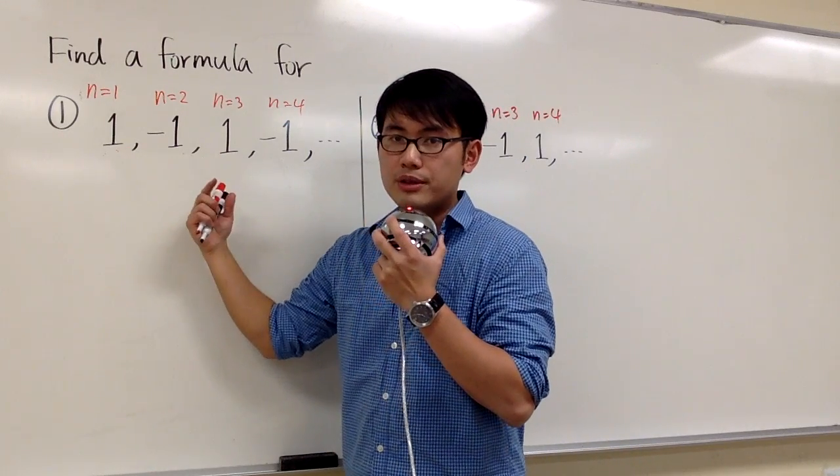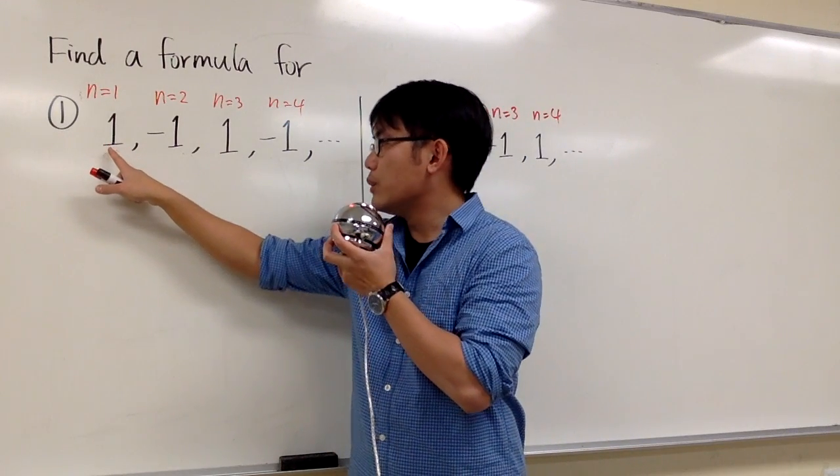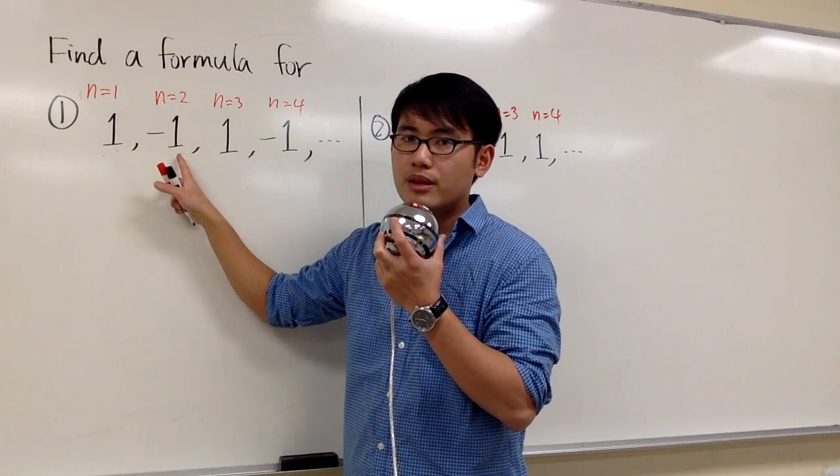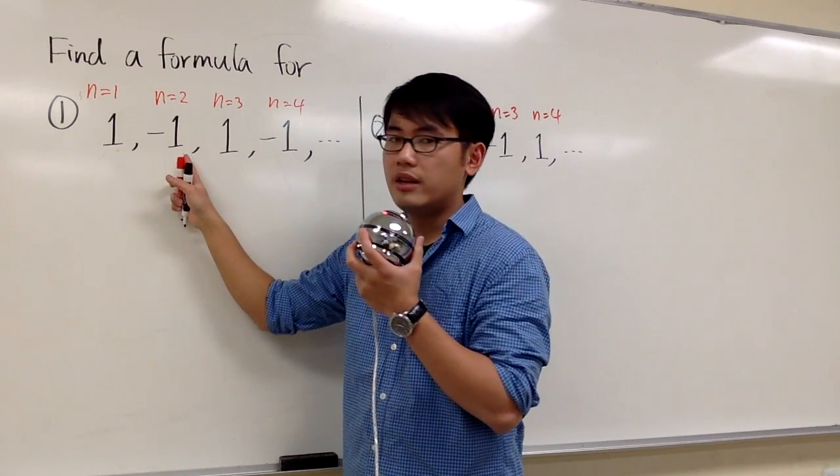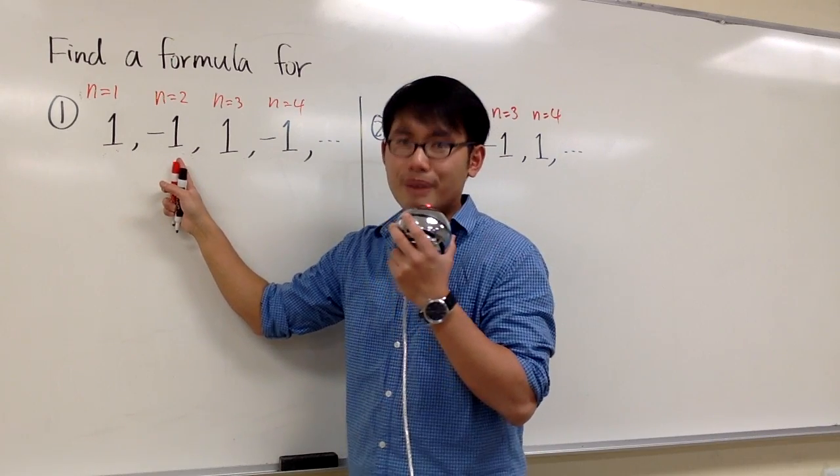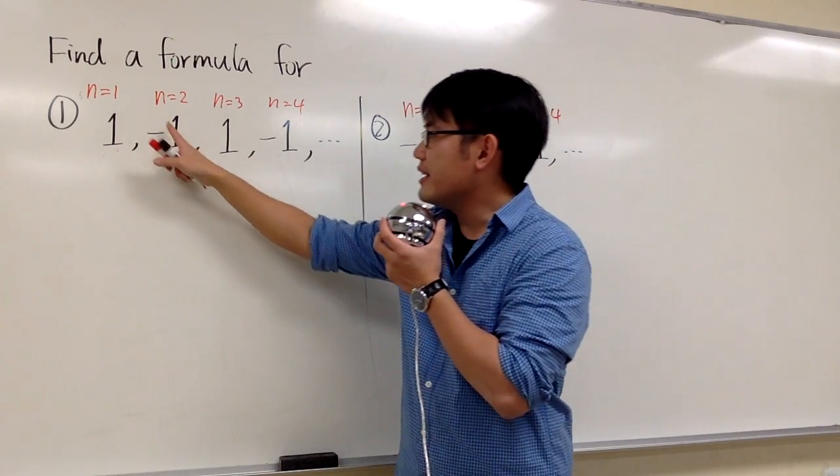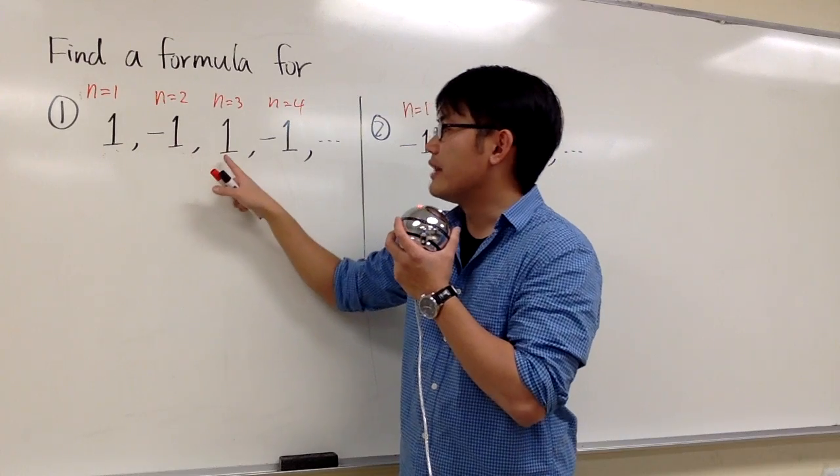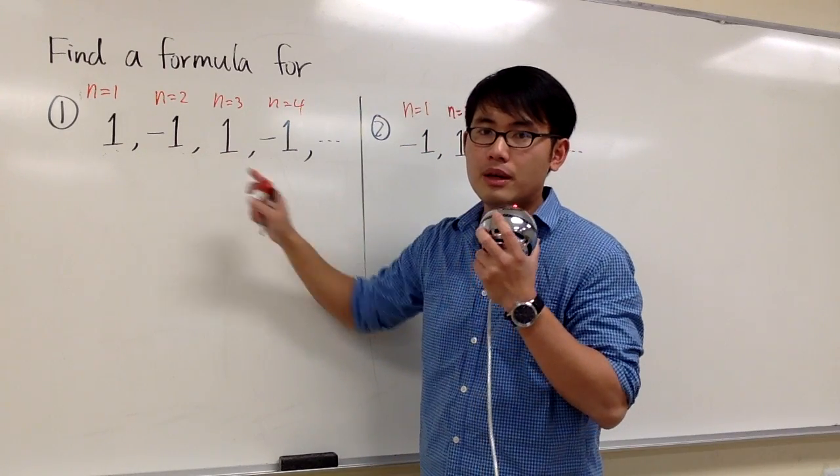Let's take a look at these numbers. First, we have to ask ourselves, how can we get from the first number to the second number? What do we need to do with 1 to get negative 1? Well, I know that 1 minus 2 gives me negative 1. But unfortunately, if I take negative 1 minus 2, that does not give me positive 1. So that's not the pattern.